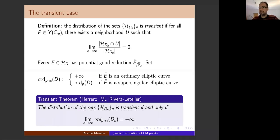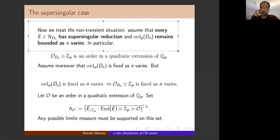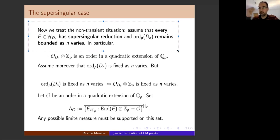Now I will explain what happens in the other cases — the non-transient situation. We will assume from now on that every elliptic curve in H_{D_n} has supersingular reduction, and also that the p-adic valuation of D_n remains bounded as n varies, since otherwise we know the distribution is transient.